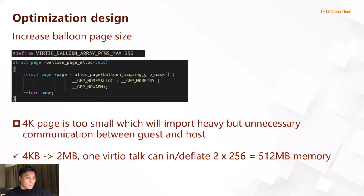The second optimization is increasing the balloon page size. In the Linux kernel source, balloon page unlock only allocates one 4K page at a time, which is too small for current virtualization environments and introduces heavy, unnecessary communication between guest and host. A small change to use alloc_pages to allocate a larger size — for example, 2MB instead of 4K — makes communication much more efficient. One virtqueue operation can then inflate or deflate 512 pages worth of memory, significantly reducing communication frequency.